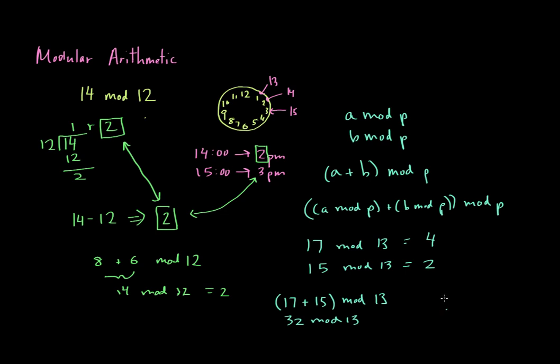So what is the remainder when 32 is divided by 13? So if we had to draw it out here, we had 32, and we're dividing that by 13. Well, you can say 2, you get 26, you get a 6 left, and so you get 2 remainder 6. So the answer is 6.